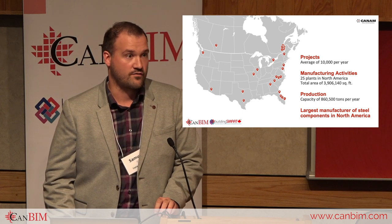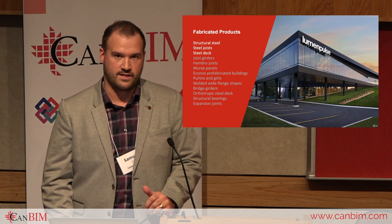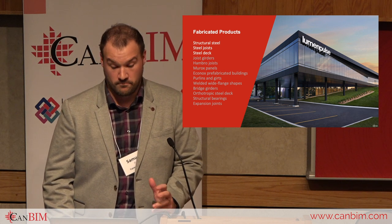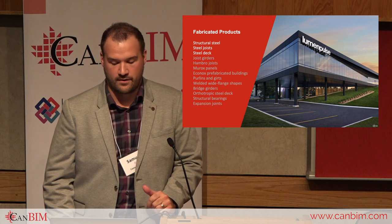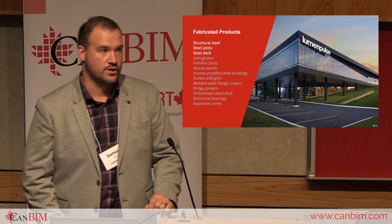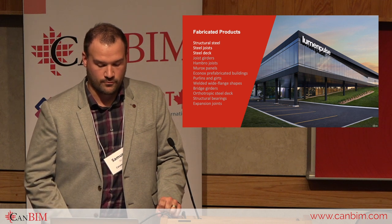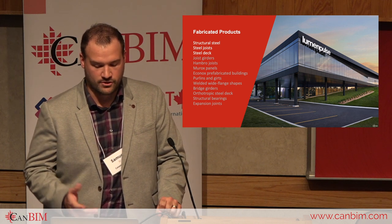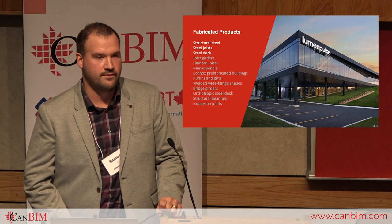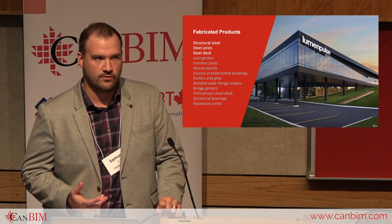Here you see a list of steel products that we provide: structural steel, steel joists, and steel deck. Joist girders, up to Hambro joists, which are mostly used for residential applications. Murox panels, Equinox prefabricated buildings, purlins and girts. And then the rest are mostly bridge products — welded wide flanges, bridge girders, orthotropic steel deck, structural bearings, and expansion joints. Today we're going to talk mostly about the top three, which Can-Am is most renowned for in the industry.